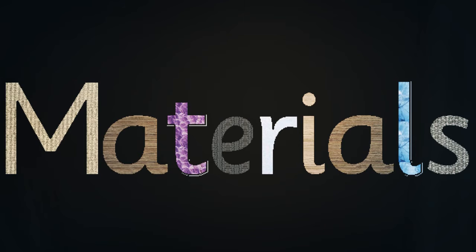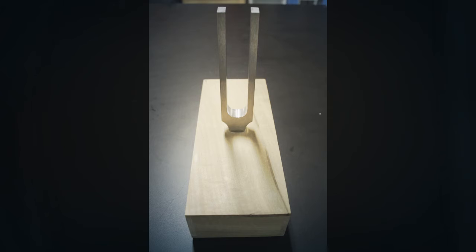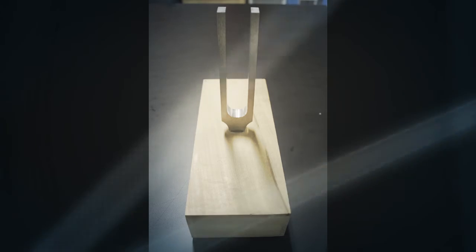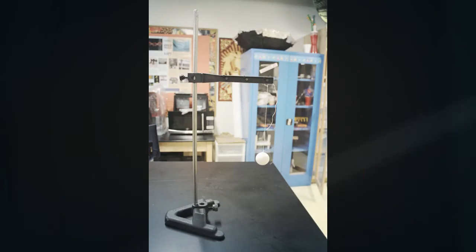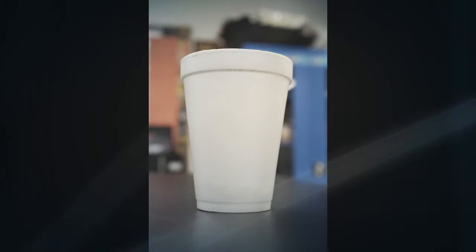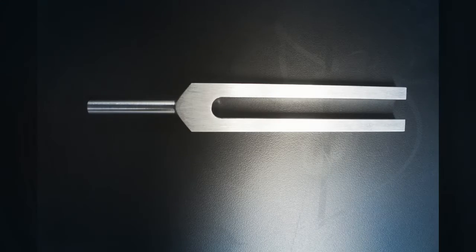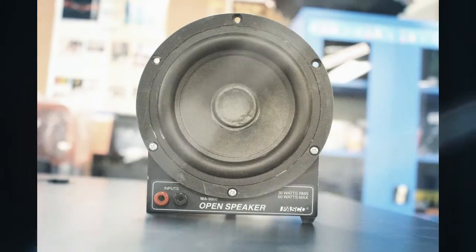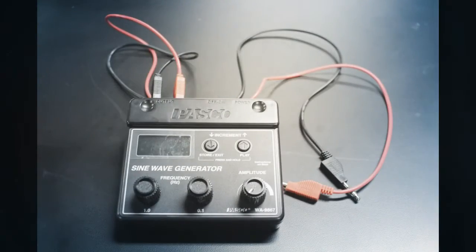We will need the following materials: a wooden box with a tuning fork, a ping pong ball attached to a string, a wooden stick, a cup of water, a tuning fork, a Pasco speaker, a Pasco wave generator, and of course, a gravity tube.